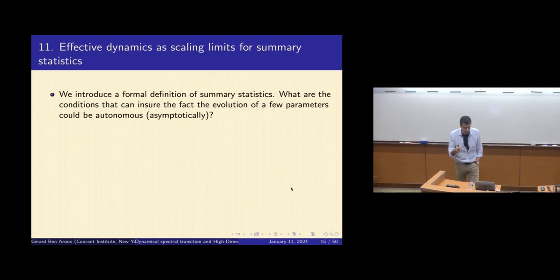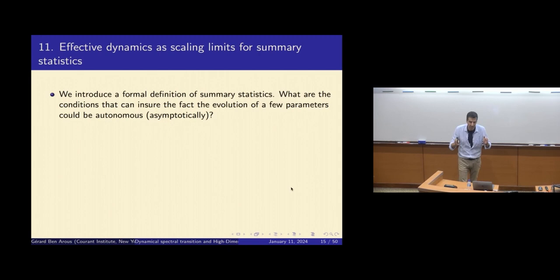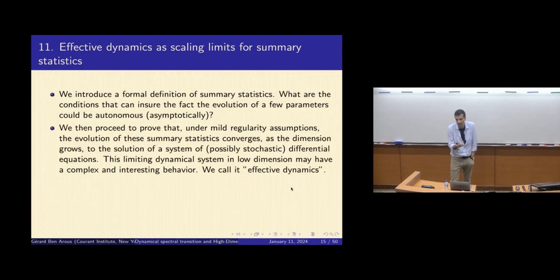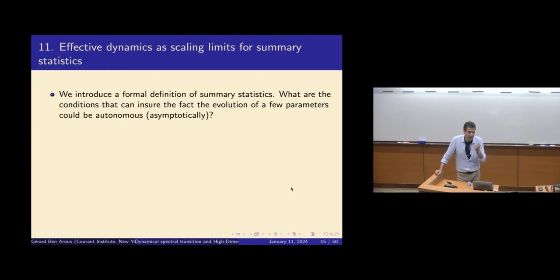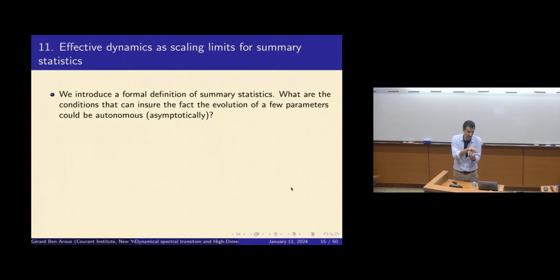We introduce a formal definition of summary statistics: something is a summary statistic if the projection of the dynamics obtained by SGD is autonomous. We have a kind of Bourbaki-like definition — if these conditions are satisfied, then the projection is autonomous. It can ensure that the evolution of a few parameters could be autonomous asymptotically. We call them summary statistics. For example, if the population loss is a function of 10^9 variables but is mainly a function of 17 variables plus a small perturbation, then you'd hope the projection of only those 17 variables would be autonomous.